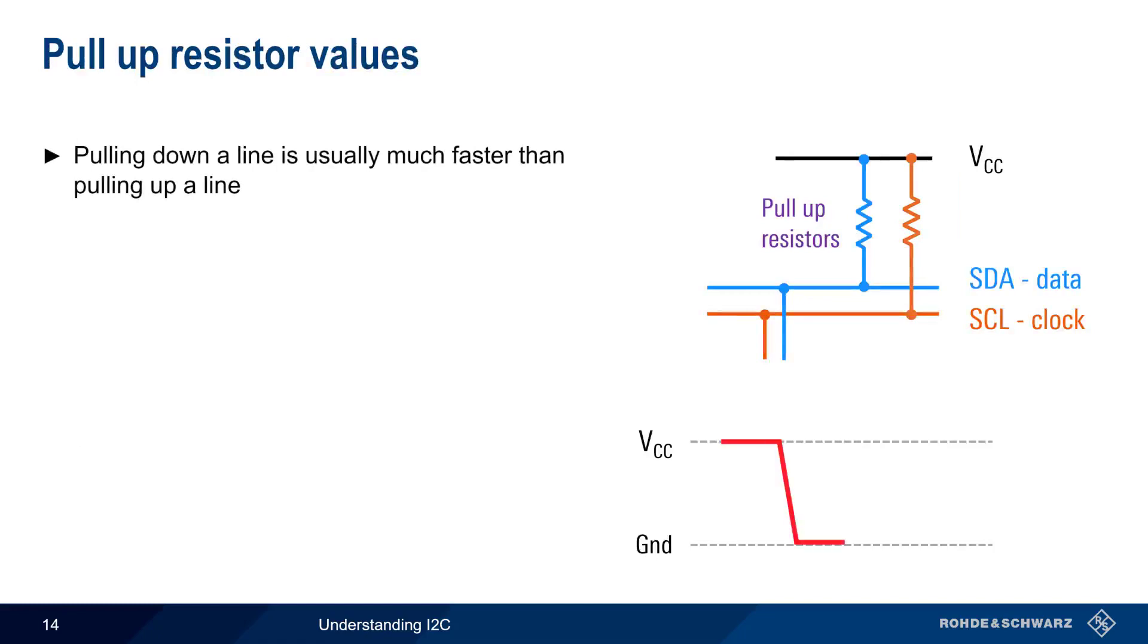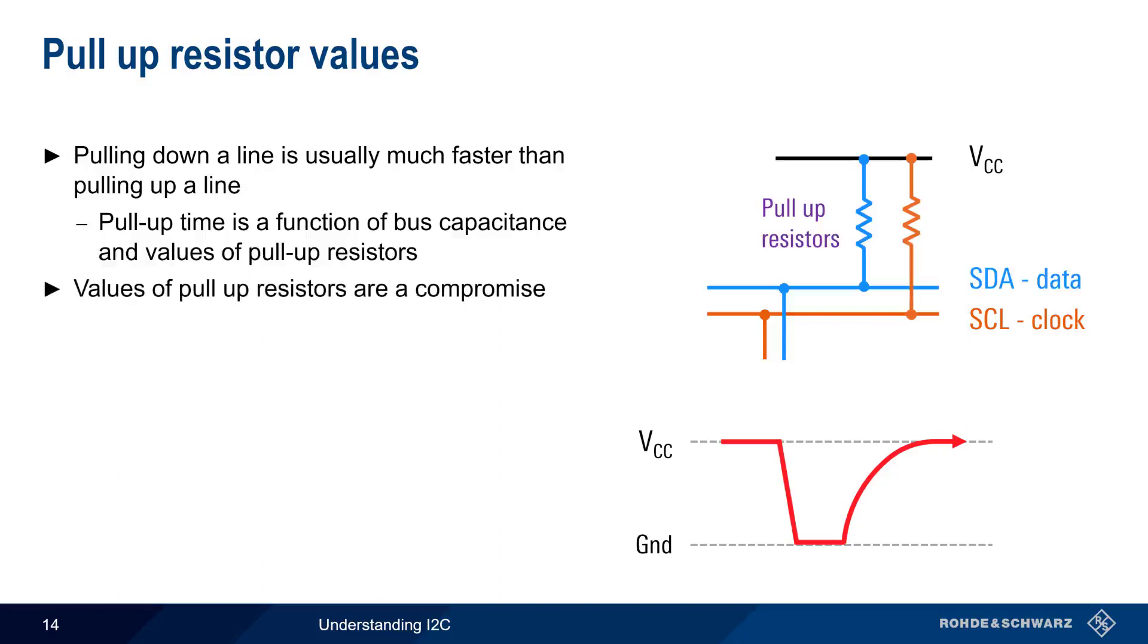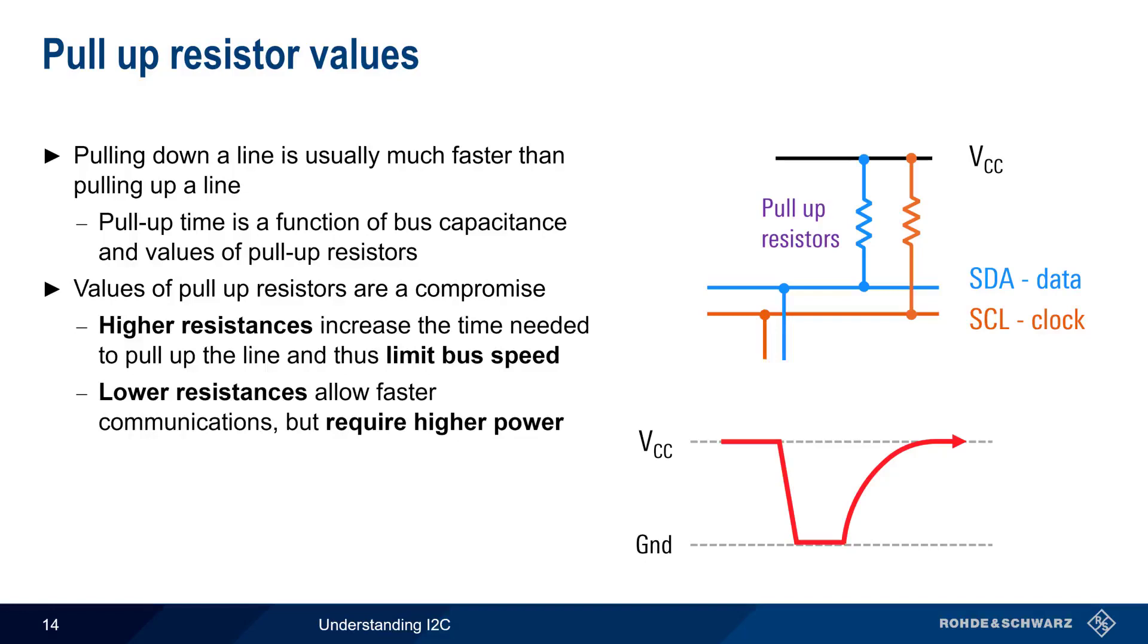Pulling an I2C line down to ground is usually much faster than pulling that line back up to idle voltage. The time required to pull a line back up is a function of both the capacitance of the bus, as well as the values of the pull-up resistors. The value used for the pull-up resistors represents a compromise. Higher resistance increases the time needed to pull up the line, and this in turn limits the maximum bus speed. Lower pull-up resistance values decrease pull-up time and allow faster communications, but they also require higher power. Typical I2C pull-up resistor values are in the range of about 1 kOhm to about 10 kOhms.